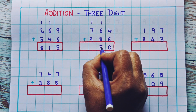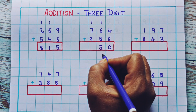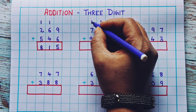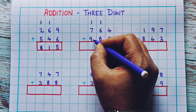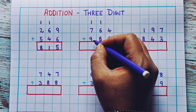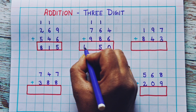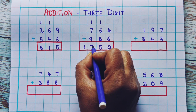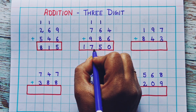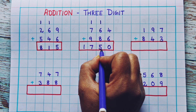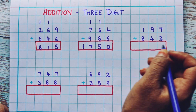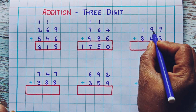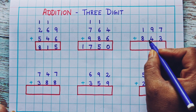Now 1 plus 7 is 8, 8 plus 9 is 17. Here I'll write 17, so the answer is 1750.